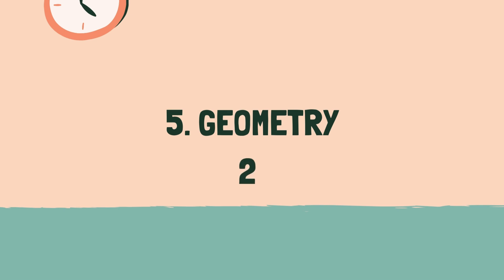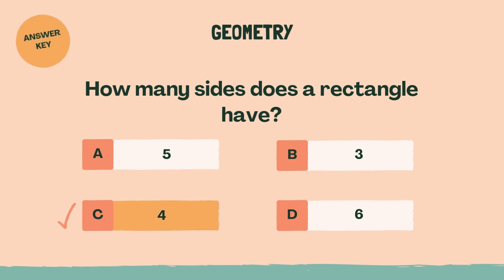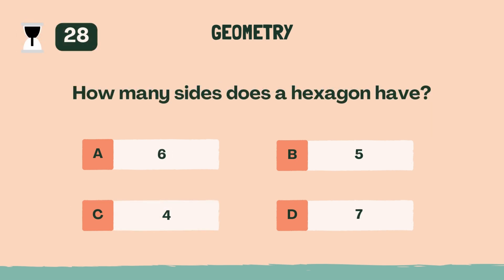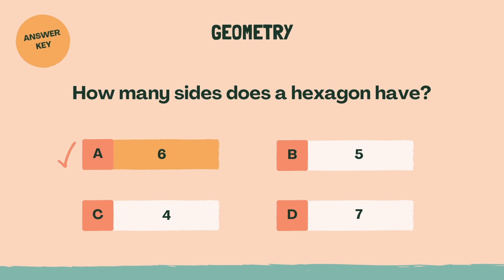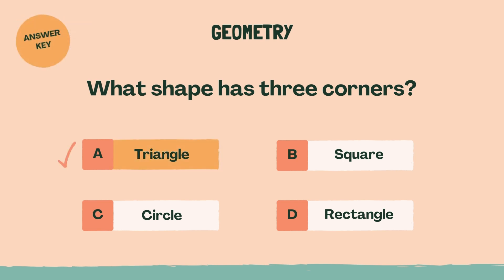Three, two, one, go. How many sides does a rectangle have? C, 4. How many sides does a hexagon have? A, 6. What shape has three corners? A, triangle.